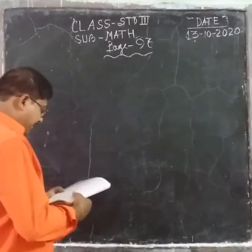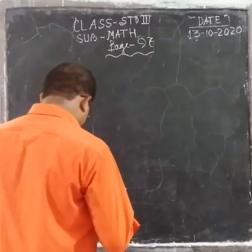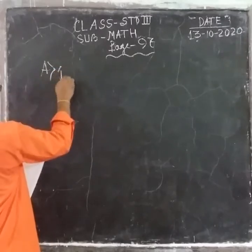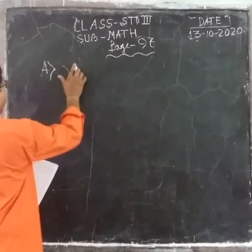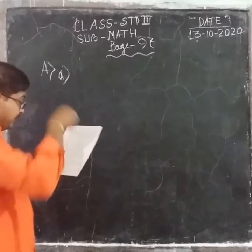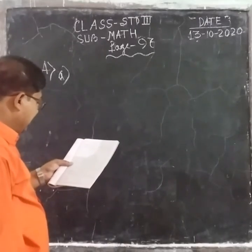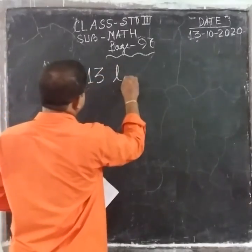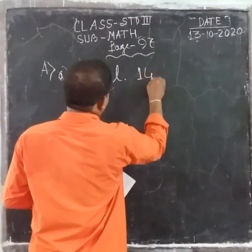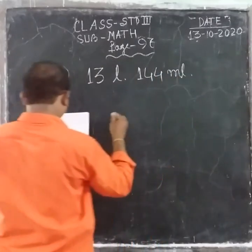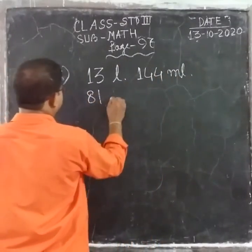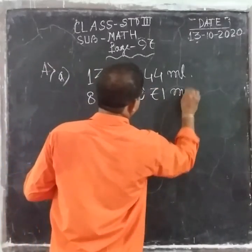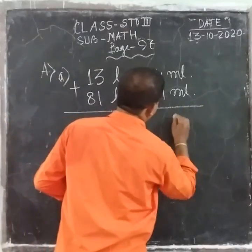Okay, so first let's ask the question. Block A. Question number A, Block A. We have 13 liters 144 milliliters to add with 81 liters 71 milliliters. Very simple, this one.